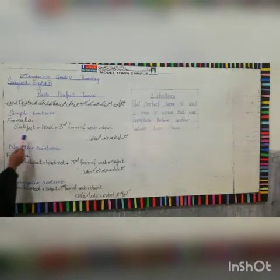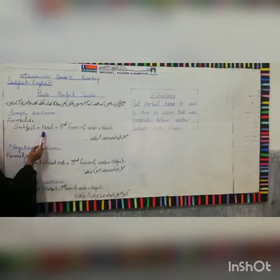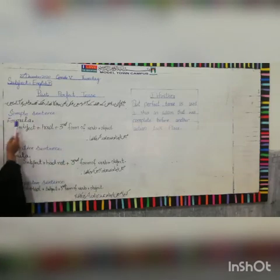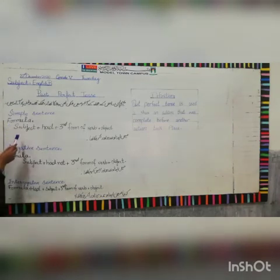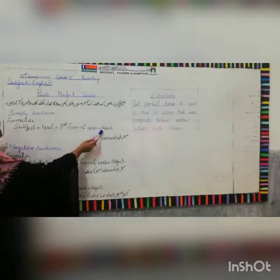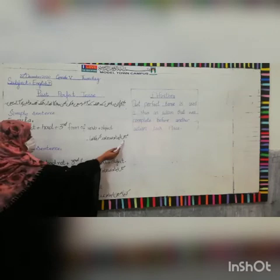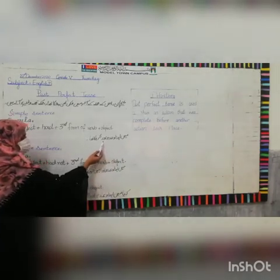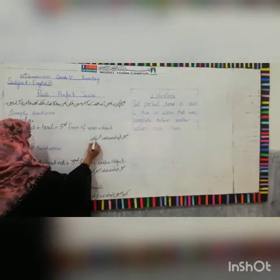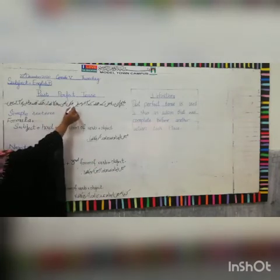In this sentence, we use the third form of the verb and the helping verb of this sentence is 'had'. The simple sentence formula is: subject plus 'had' plus third form of verb plus object — this means Past Perfect Tense.